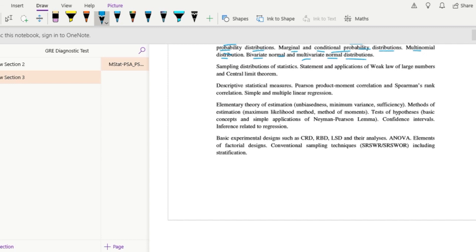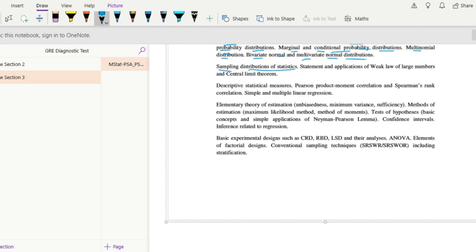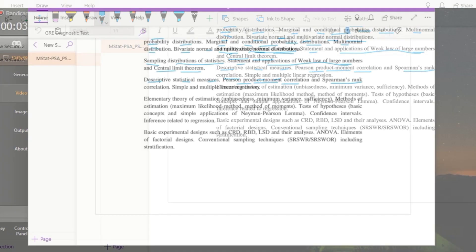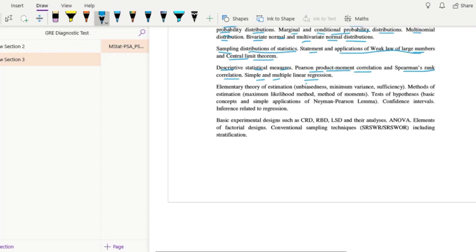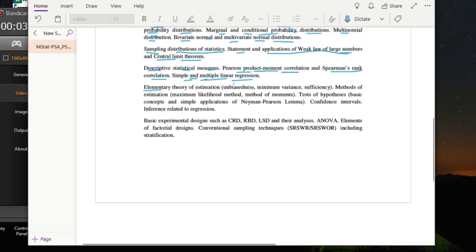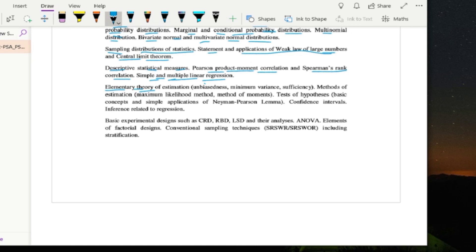Then we have sampling distributions of statistics, statement and applications of weak law of large numbers and central limit theorem, then descriptive statistical measures, Pearson product moment correlation and Spearman's rank correlation, simple and multiple linear regression, then elementary theory of estimation, unbiasedness, minimum variance, and sufficiency.